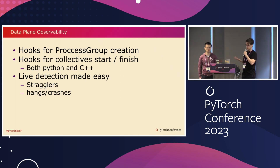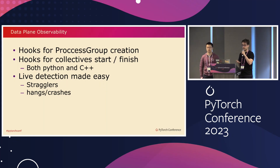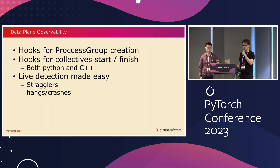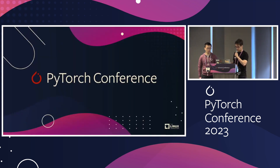Another important use case is hangs and crashes. When there is some fault and your collective just hangs, the default PyTorch behavior is to crash after half an hour. These hooks allow operators to build tools that can, in real time, detect those issues, troubleshoot, and even manually inspect the failing nodes. We believe this will significantly improve their quality of life and productivity. That's it — we'll take questions now.